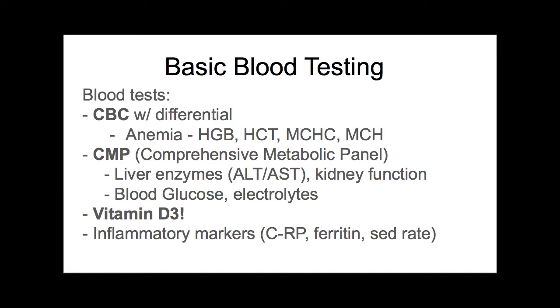Ferritin is another acute phase reactant that can indicate inflammation. Sedimentation rate is common in the autoimmune world but actually more rare to see elevated. Sometimes people come in feeling so inflamed — like they can't lift their shoulder, it feels like it's on fire — and their labs are completely normal. That gets really tricky with some of these inflammatory markers. Recently I saw two patients: one had a C-reactive protein of around eight that came down to around two, and another started at six and came down to four. Seeing inflammation come down is just a good thing when you have autoimmune disease.